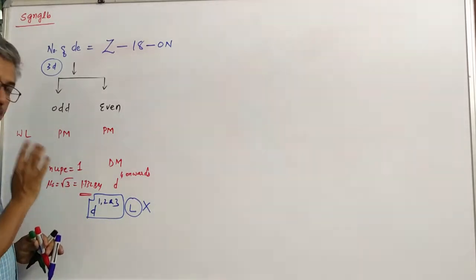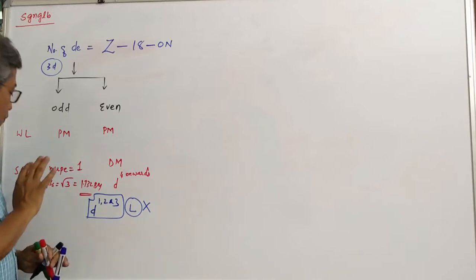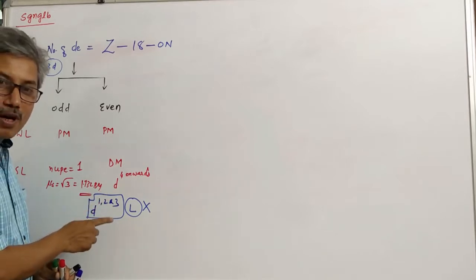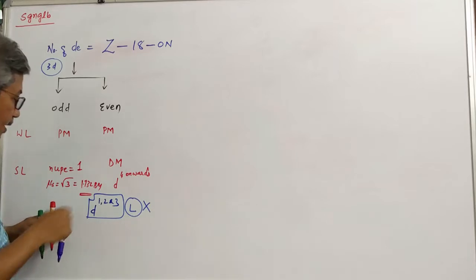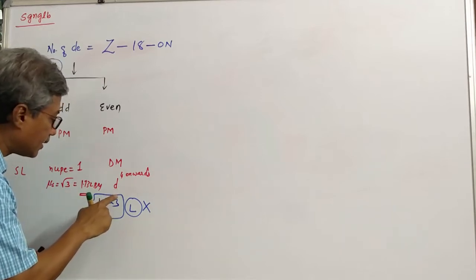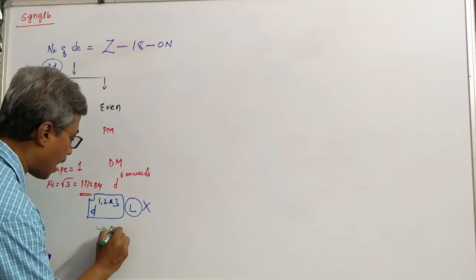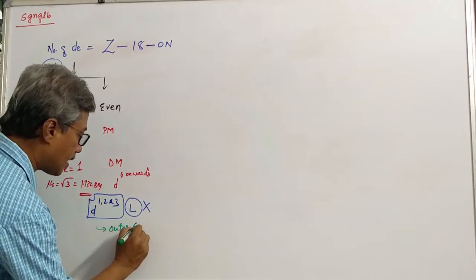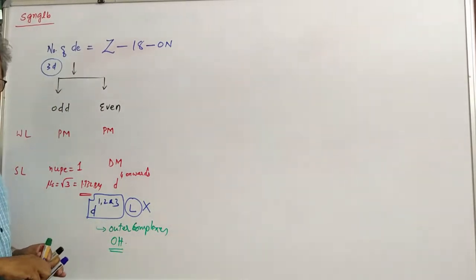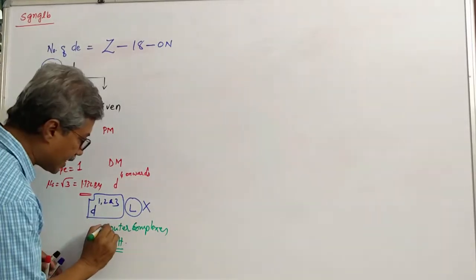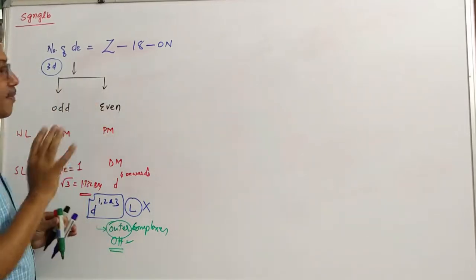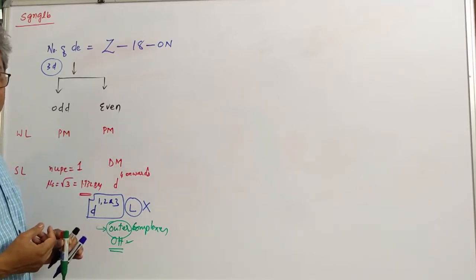Remember students, force pairing is possible only if a strong ligand is present. Force pairing does not occur for complexes with D electrons of 1, 2, or 3. These complexes — where D electrons are 1, 2, or 3 — mostly form outer complexes. Outer complexes tend to possess octahedral geometry. Sometimes it may not be outer, but it will be surely octahedral. This concept will be very clear when we solve some examples.